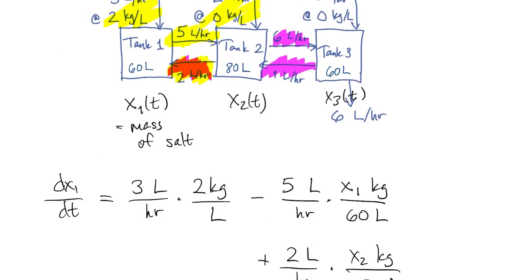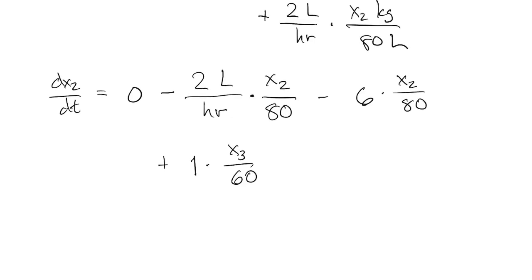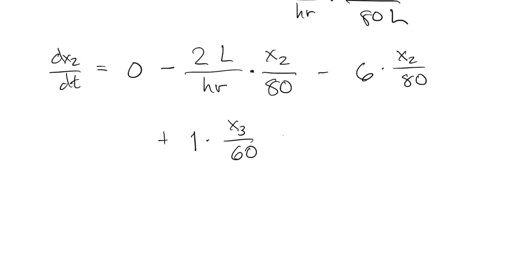And then finally, we have the input from tank one. So that's an increase of five liters per hour times the concentration there in tank one. That's everything for tank two.